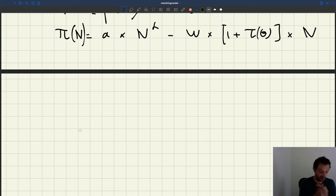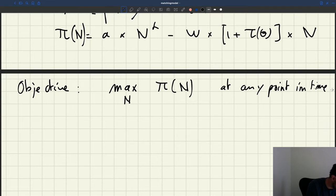Here what the firm does is the objective of the firm is to maximize profit by choosing the number of producers at any point in time. So that's going to be our firm objective.